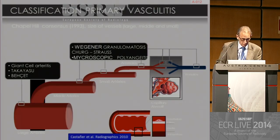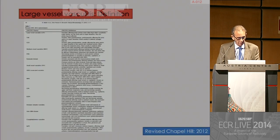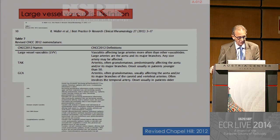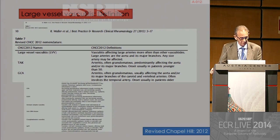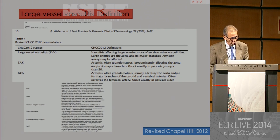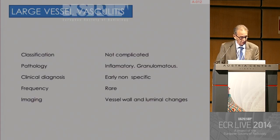With this drawing from Eva Castaner's article in Radiographics, you can see that vasculitis is classified into large vessels, middle vessels, and small vessels. I'm talking about large vessel vasculitis, which is more straightforward. The last Chapel Hill classification defines vasculitis of large vessels as vasculitis affecting large arteries more often than other vasculitis. Large arteries are the aorta and its major branches, but any size artery may be affected. The two main types are Takayasu and Giant Cell, although Behcet's is also included in the classification.